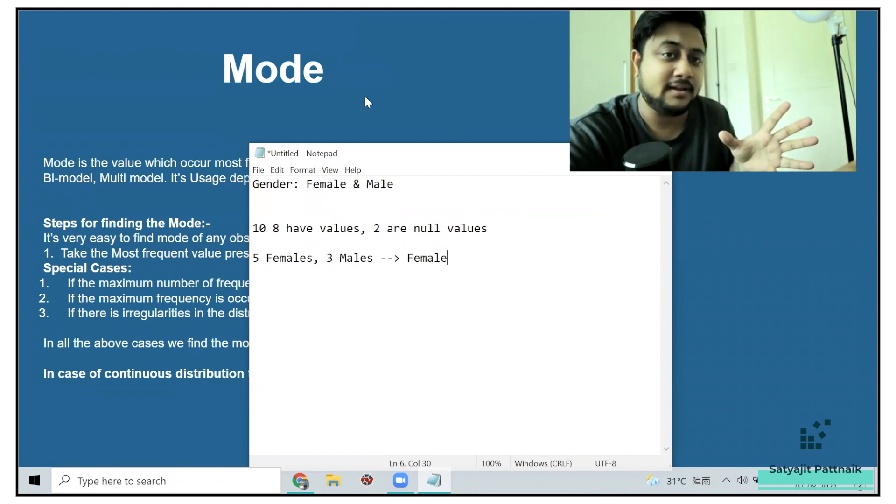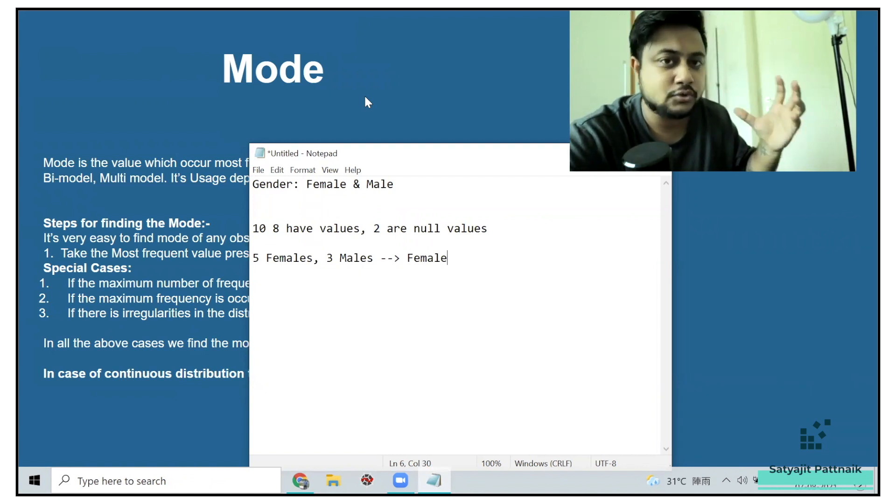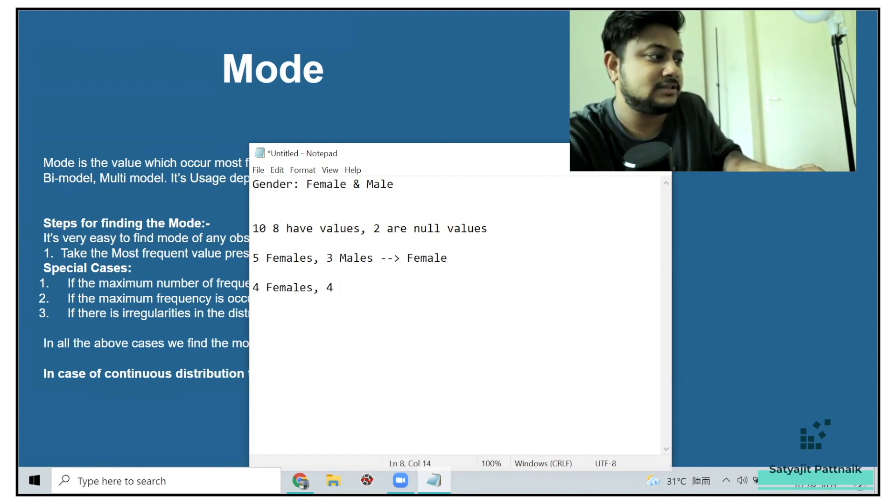Mode is basically the observation which is having in bulk. For example, if you have a categorical variable, you have five valid values. If one of them is having more count, the mode is going to be that. Just in case, if I have four females and four males. So in this case, the mode will be both female and male, but there is a catch.